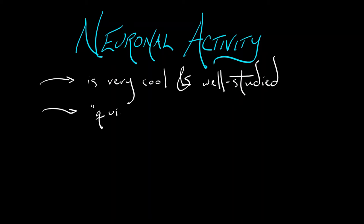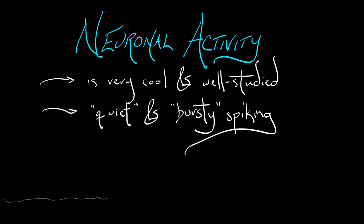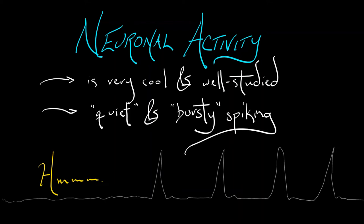So to begin, let's think in terms of the activity of individual neurons. This is a very cool and well-studied field. What you tend to have with individual neurons is electrochemical activity that most of the time is quiet, and then you'll get this burst, this spiking behavior that can often be somewhat periodic, but then can often get a little bit weird. I wonder what kinds of tools we have at our disposal to describe such phenomena.